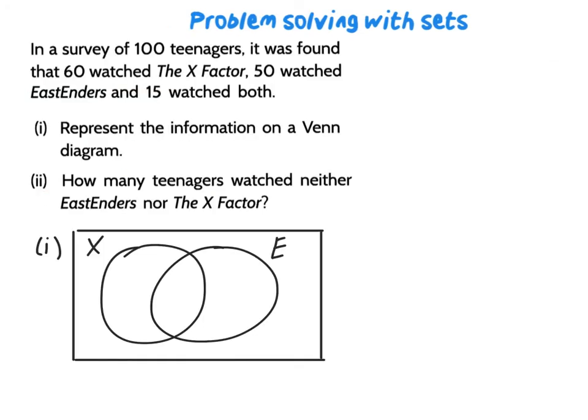Now let's take this problem here. We're told that there's a survey of 100 teenagers and it found that 60 of them watched X factor, 50 watched EastEnders, and 15 watched both. Represent this information in the diagram. Okay, let's say that this is the set that watched X factor and E represents EastEnders.